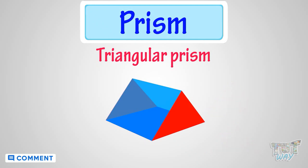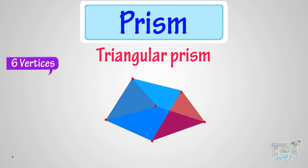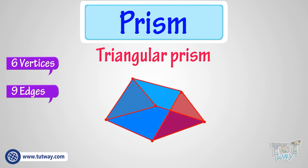This is a triangular prism because its top and bottom faces are triangular in shape, and all other faces are rectangular. It has 6 vertices, 9 edges, and 5 faces.